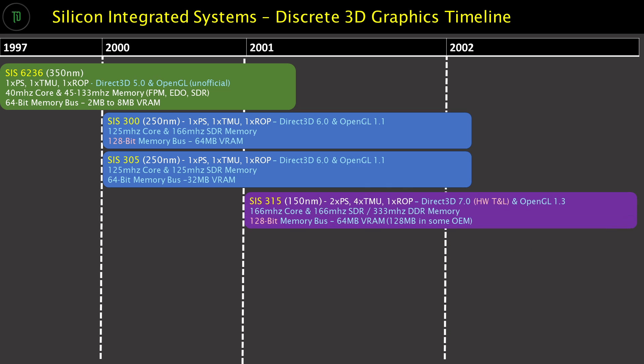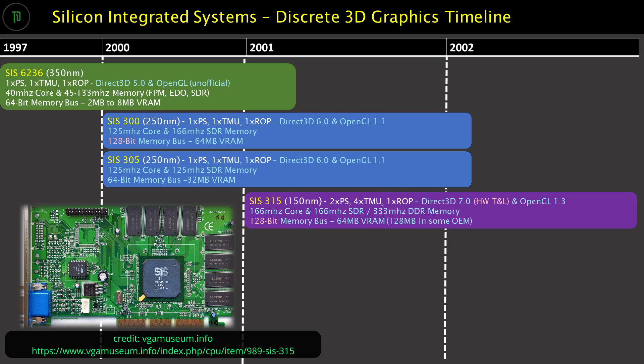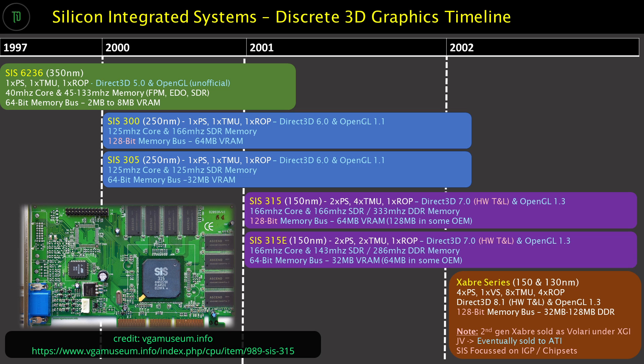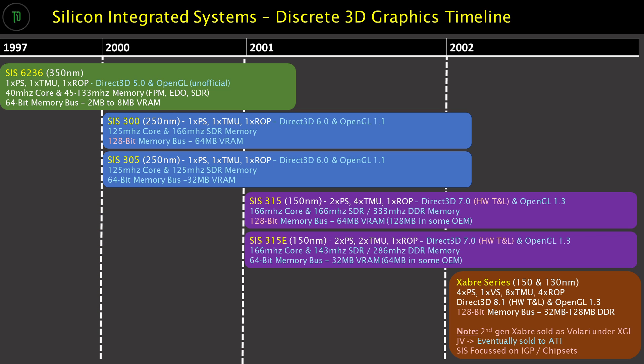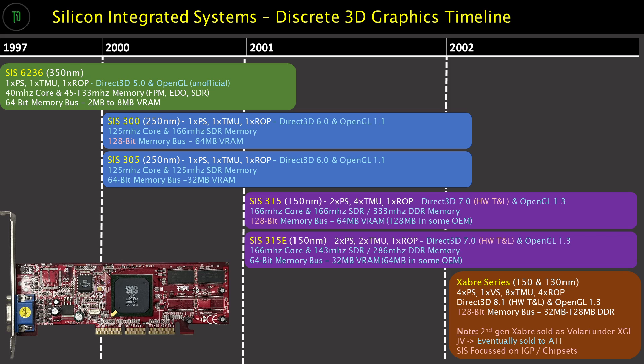In December of 2001 SIS would announce the 315, which appeared to have a large performance increase over the 300, sporting a 150nm process and some hefty configuration specs including up to 4 texture mapping units and SDR or DDR memory support on the 128-bit memory bus. Again SIS would make the 64-bit memory bus version of this and call it the 315E, which is the card we're looking at in this video.